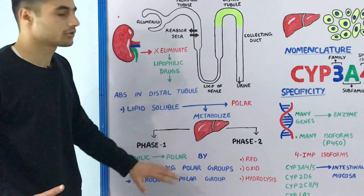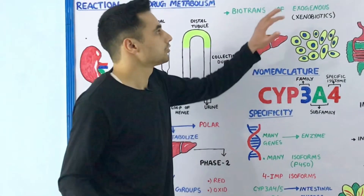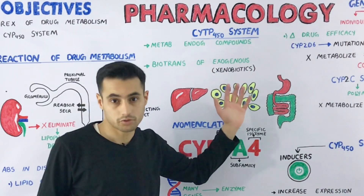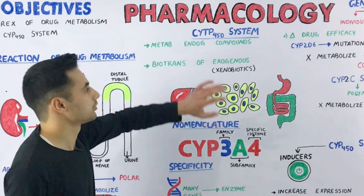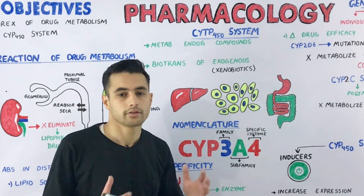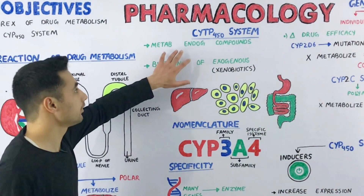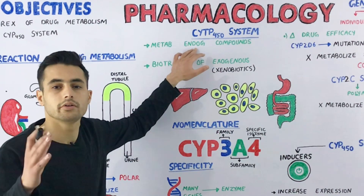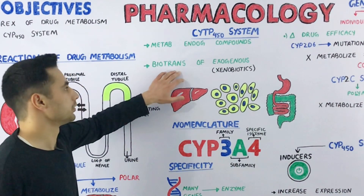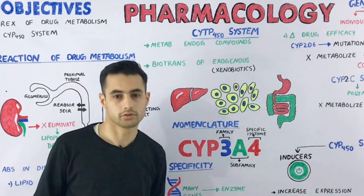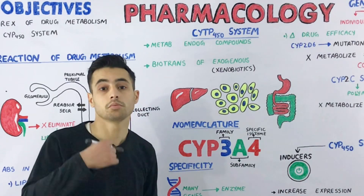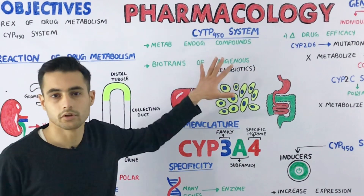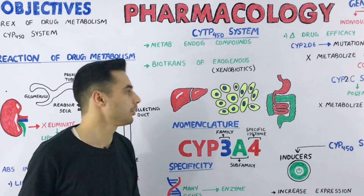The phase one reactions utilize a system known as the cytochrome P450 system, also known as the microsomal mixed function oxidase system — no need to remember the complex name, just remember the cytochrome P450 system. It is used for the metabolism of endogenous compounds like steroids and lipids, and also for the biotransformation of exogenous compounds or xenobiotics, such as drugs. The cytochrome P450 system converts these into polar compounds so they can be excreted from our body.